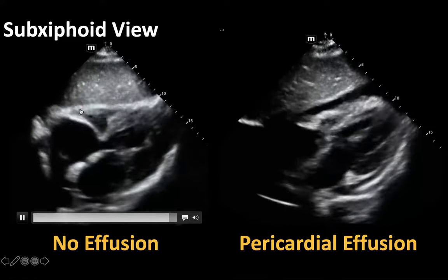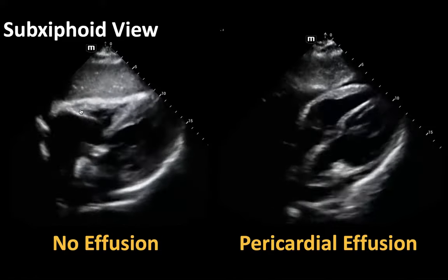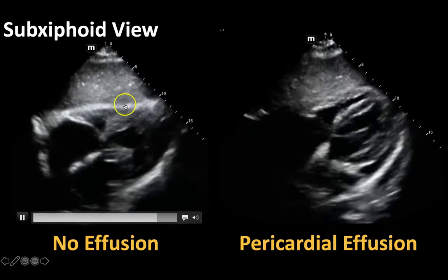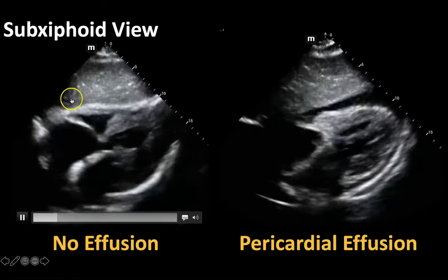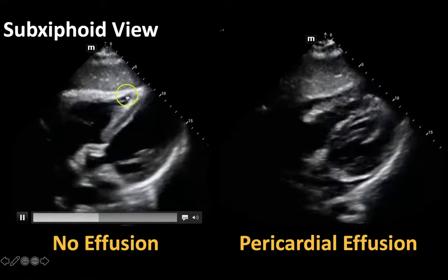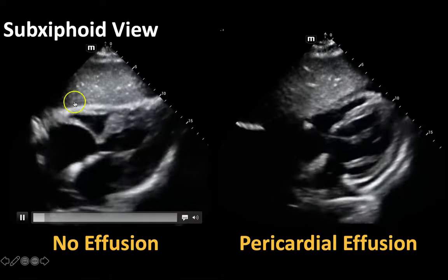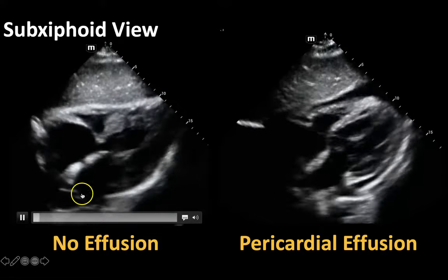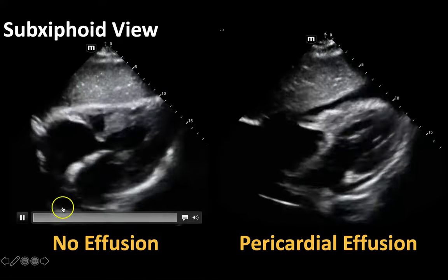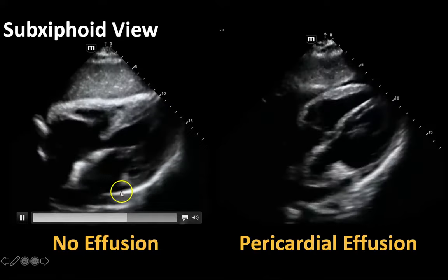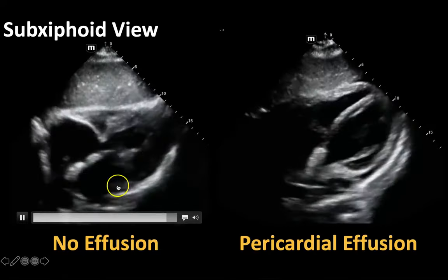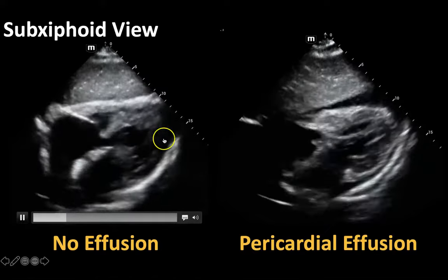What we're really focusing on in this particular view when we're looking for effusion is just the outside of the heart. Between the liver and the heart, this is where we'd expect to see that black sliver if there were any pericardial effusion. Then we focus our eye posteriorly to see if there's any circumferential effusion. We look all the way around the heart and we don't see any black stripes, so we say there's no pericardial effusion on this heart on the left side of the screen.